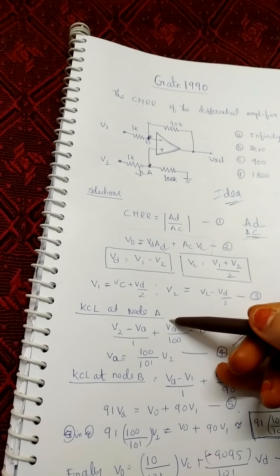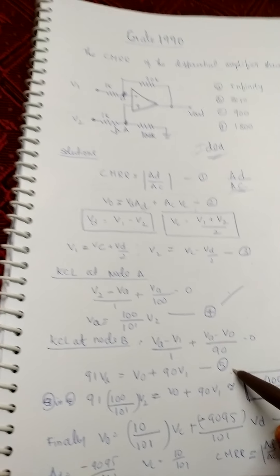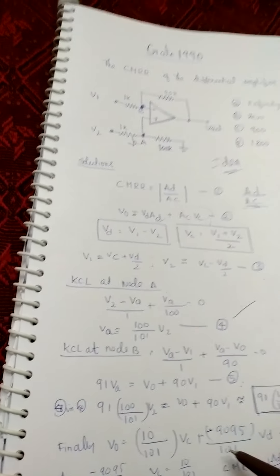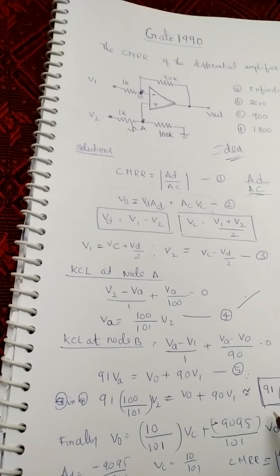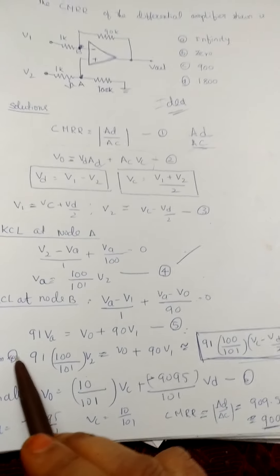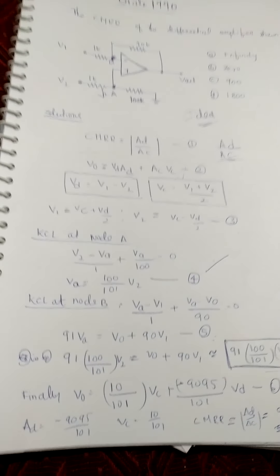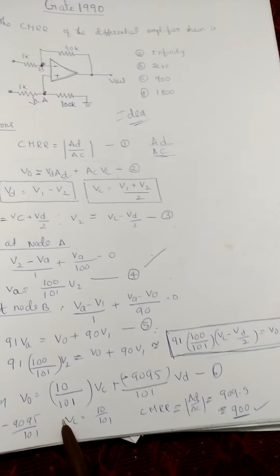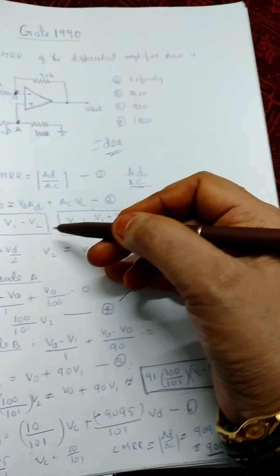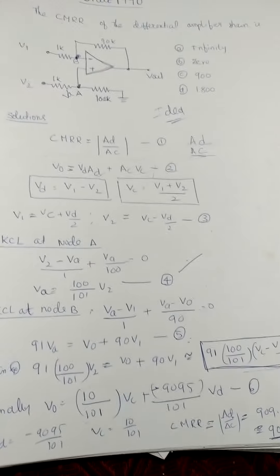From KCL at node A we got equation 1, and from node B we got equation 2. Substituting V1 and V2 in terms of Vc and Vd into these equations and combining them, we finally get the output voltage V0 expressed in the form: V0 = AD·Vd + AC·Vc.